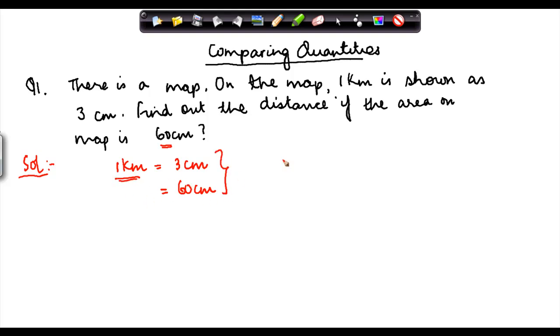On a map, suppose this is the map. We are told that 3 cm represents 1 km of actual distance. So how much distance will be represented by 60 cm? This proportion is being maintained. So therefore, how do I solve it? We can use proportions to solve this problem.